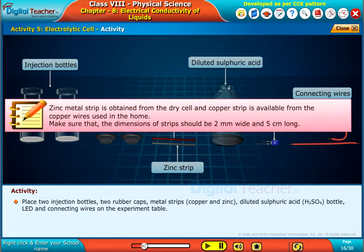Note, zinc metal strip is obtained from the dry cell and copper strip is available from the copper wires used in the home. Make sure that the dimensions of strip should be 2mm wide and 5cm long.